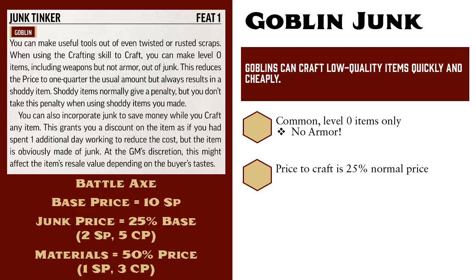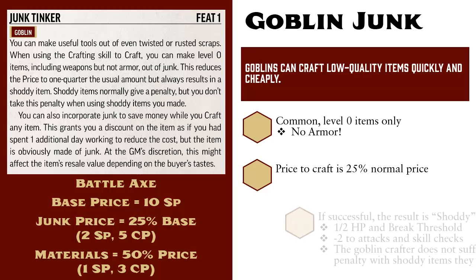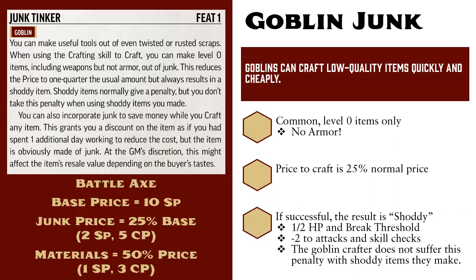This does accelerate the crafting process, but the downside is, if successful, it only produces a shoddy quality battle axe. Shoddy items have half the regular item's hit points and half the usual break threshold. And normally, when you use a shoddy item to make an attack, or any other check with that item, you suffer a negative two penalty to that roll. But goblins with the Junk Tinker feat do not suffer that negative two penalty when using any shoddy items that they created.